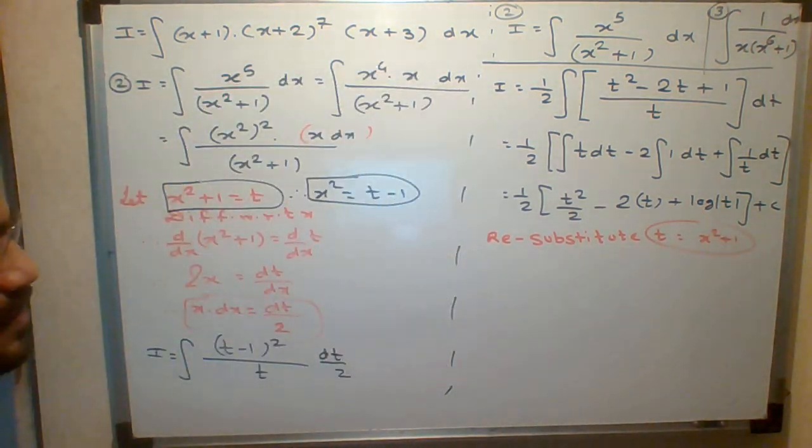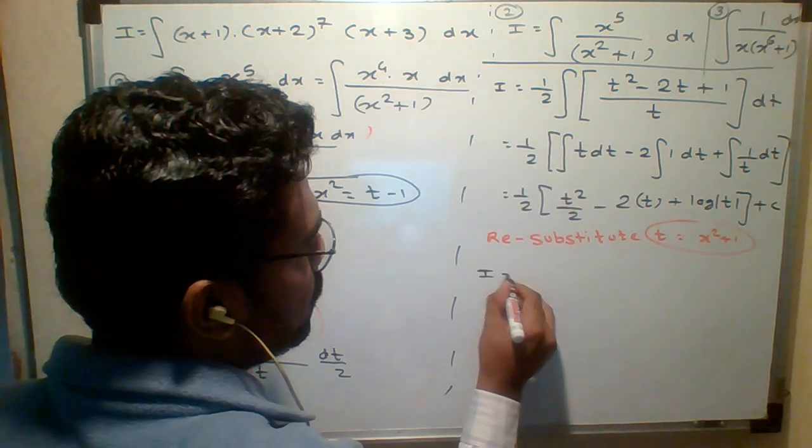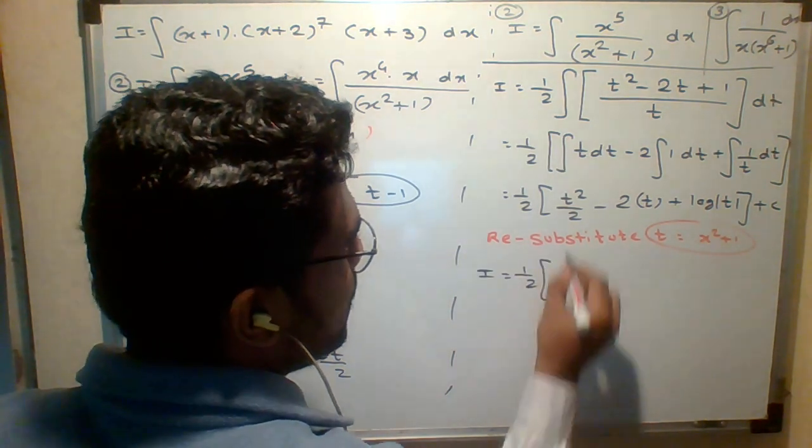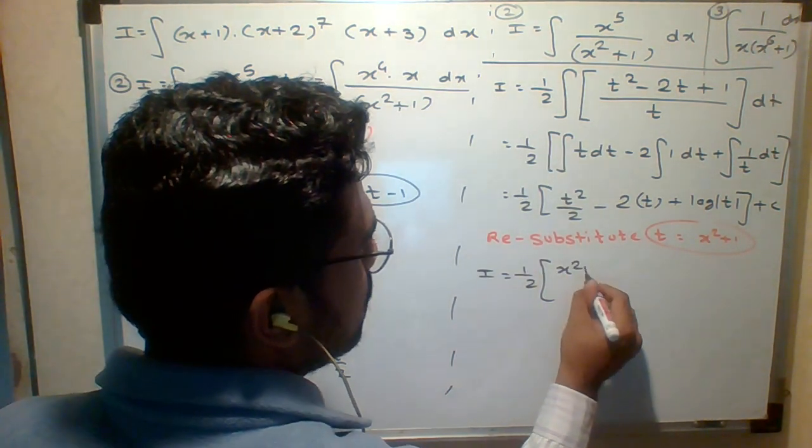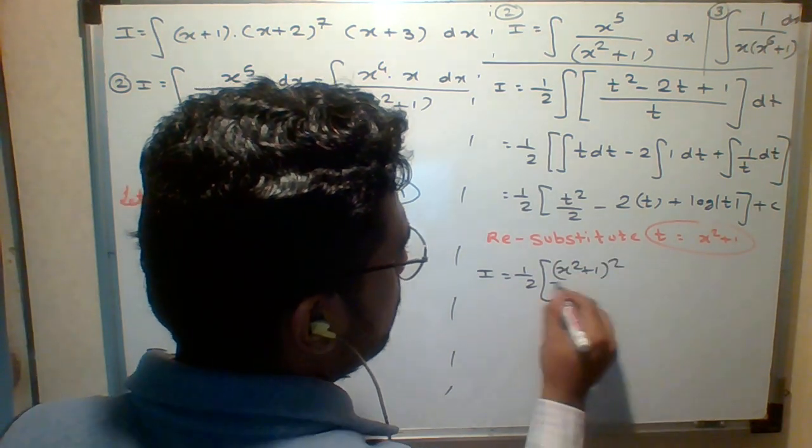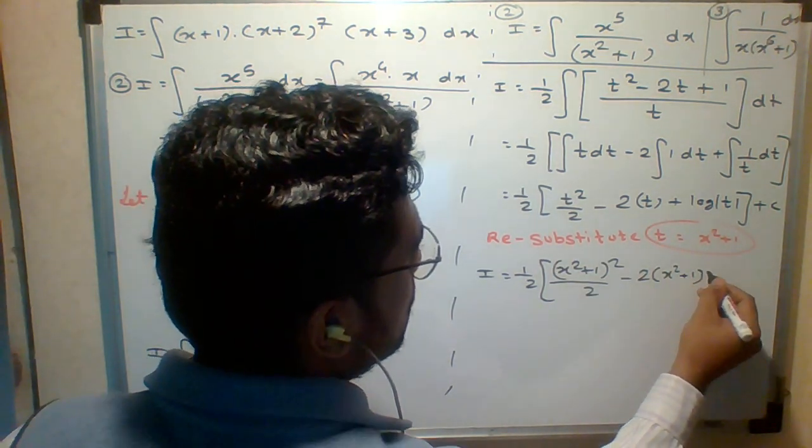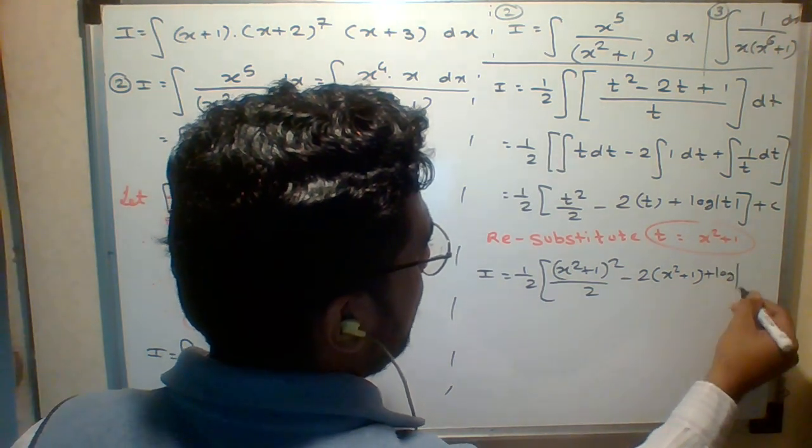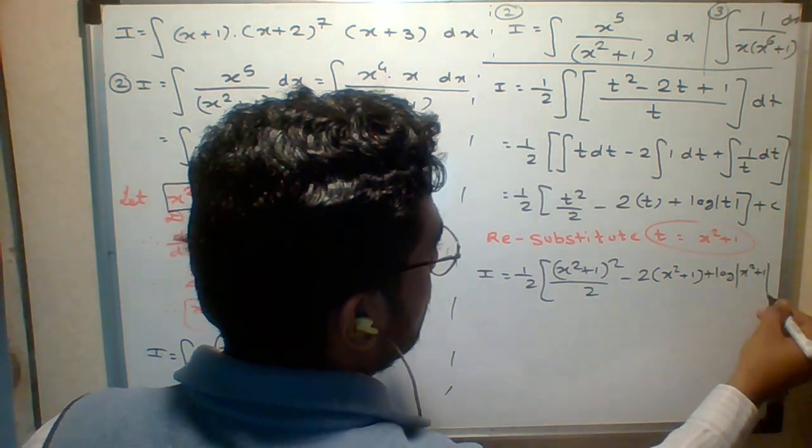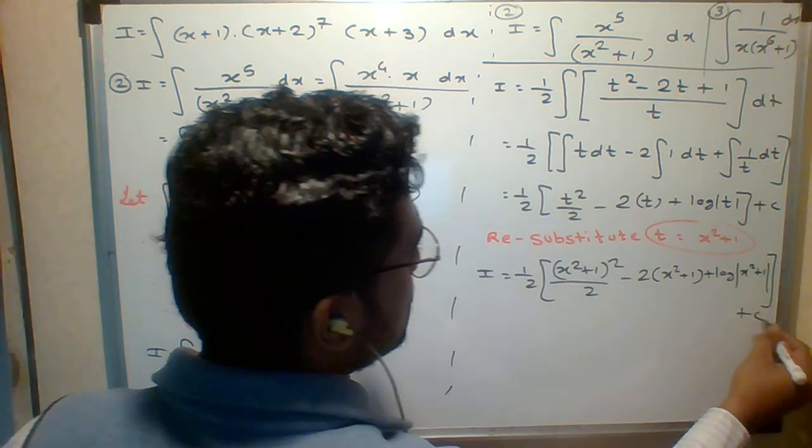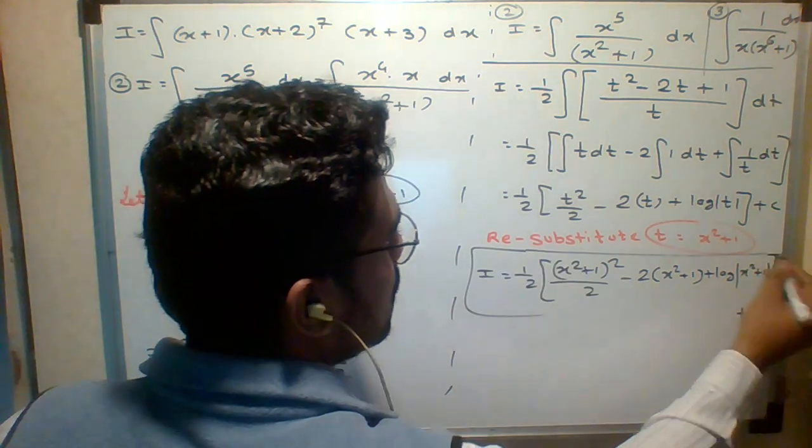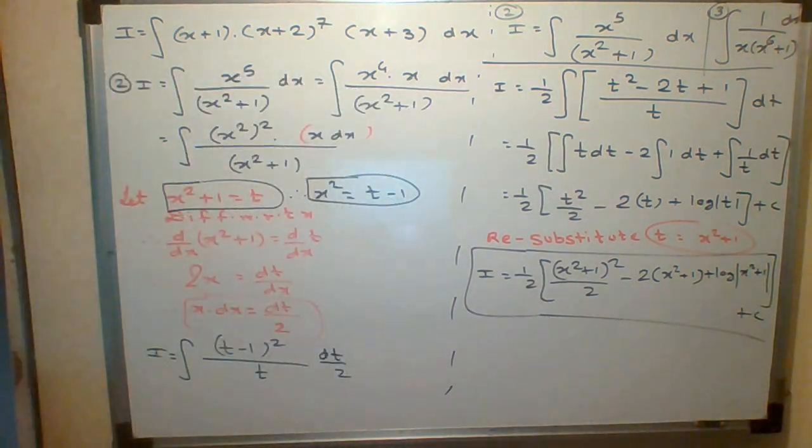Students, what is the final answer? It equals to 1 upon 2, so substitute t: x squared plus 1 the whole square upon 2, minus 2 times x squared plus 1, plus log of x squared plus 1 modulus, bracket close, plus C. This is your final answer. Hope you understood the numerical. Please copy.